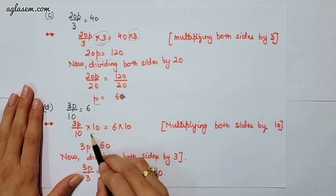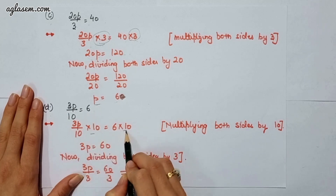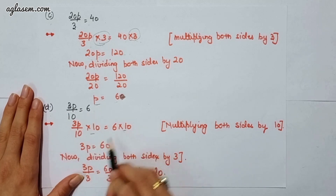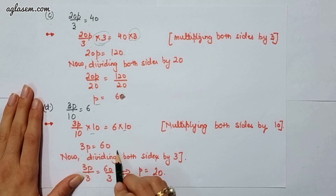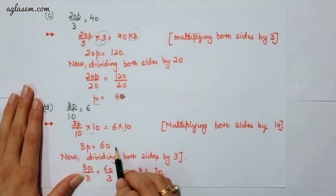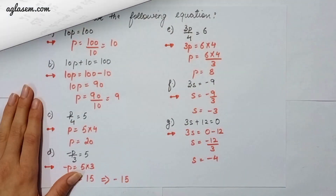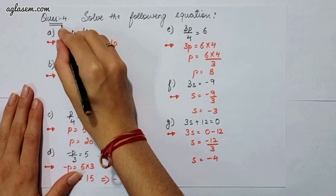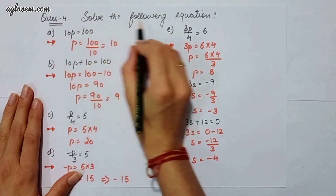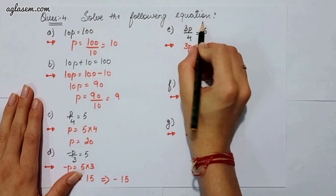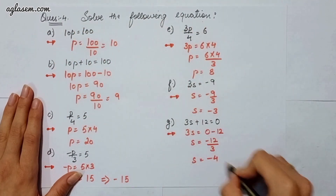Now we divide both sides by 3, so p will be 20. Moving to question number 4, which says: solve the following equations. The first part says 10p is equal to 100. Here 10 is multiplying p, so when it moves to the other side it gets divided.